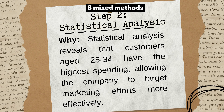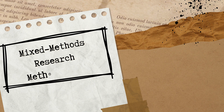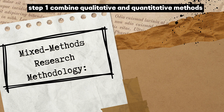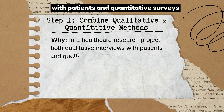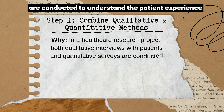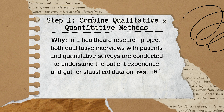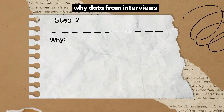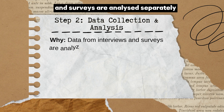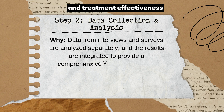Mixed Methods Research Methodology — Step 1: Combine Qualitative and Quantitative Methods. In a healthcare research project, both qualitative interviews with patients and quantitative surveys are conducted to understand the patient experience and gather statistical data on treatment outcomes. Step 2: Data Collection and Analysis. Data from interviews and surveys are analyzed separately, and the results are integrated to provide a comprehensive view of the patient journey and treatment effectiveness.